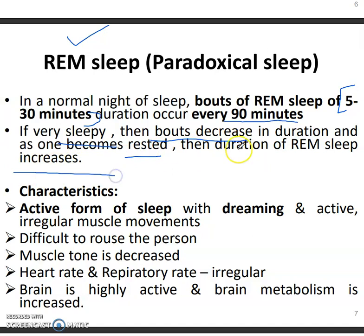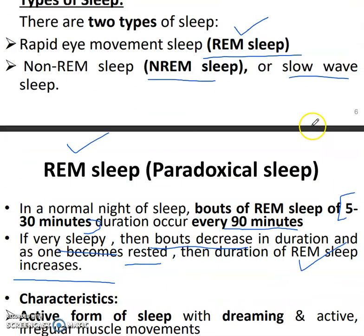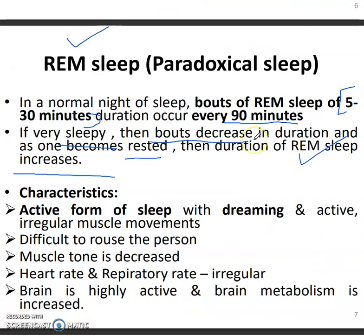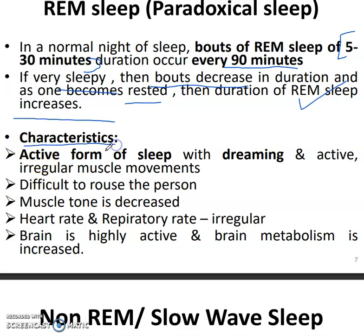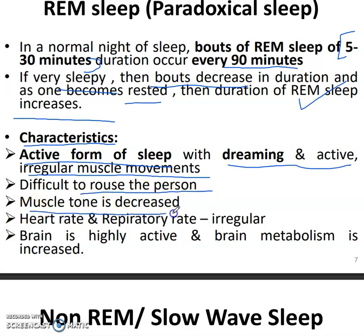REM sleep is basically the rested sleep, and non-REM sleep is the slow wave sleep. REM sleep is an active form of sleep with active and irregular muscle movements. Muscle tone is decreased, and the heart and respiratory rate is irregular because the person is thinking a lot. Brain activity and cerebral metabolism are highly active.